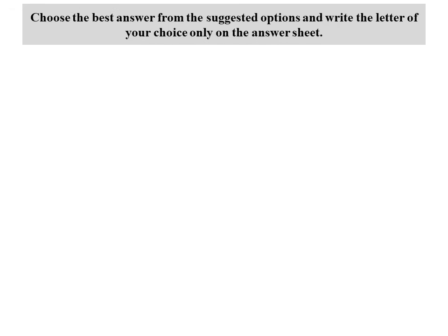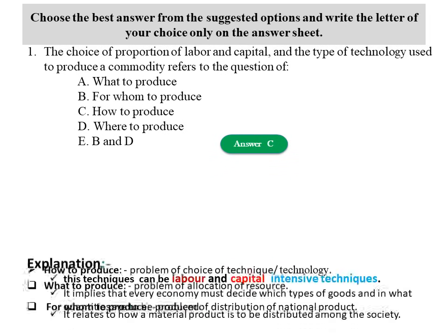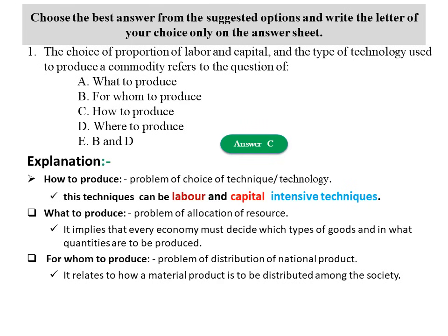Question one: The choice of proportions of labor, capital, and type of technology used to produce a commodity refers to which of the three basic economics problems? A) What to produce, B) For whom to produce, C) How to produce, D) Where to produce. The answer is C, how to produce.